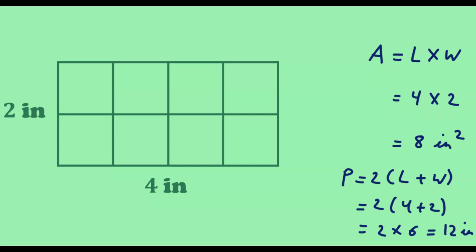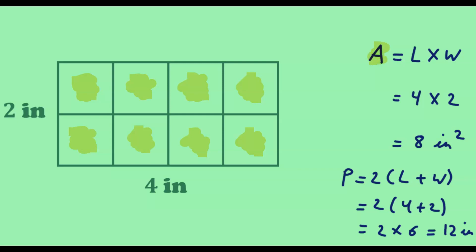Each of these squares has an area of 1 square inch. Counting them: 1, 2, 3, 4, 5, 6, 7, and 8 — there are 8 squares, each of 1 square inch in area, which cover the rectangle. So the area is 8 square inches, matching the formula.